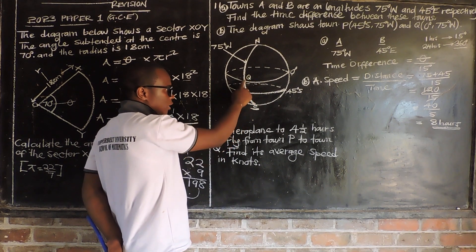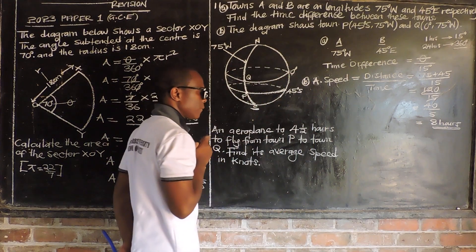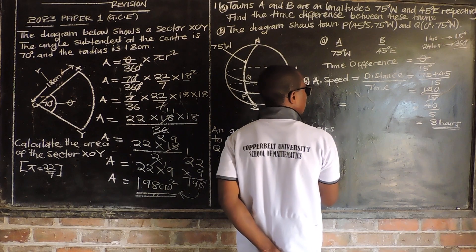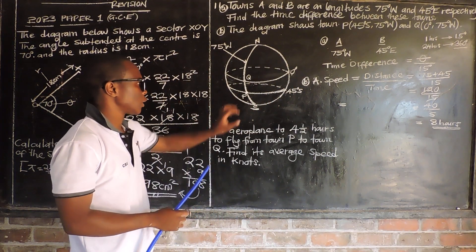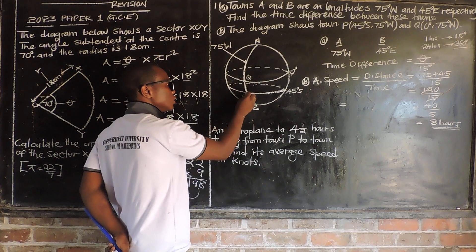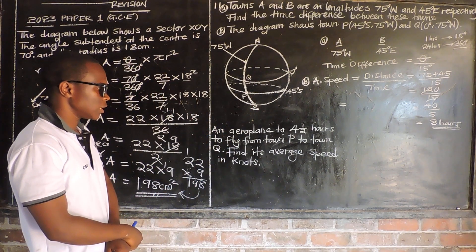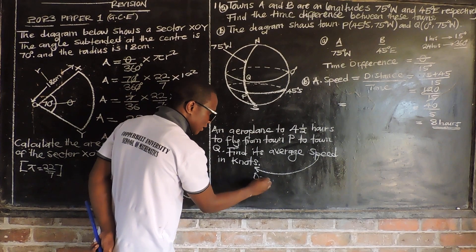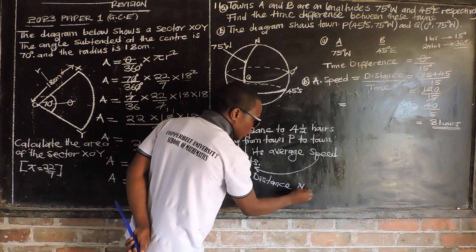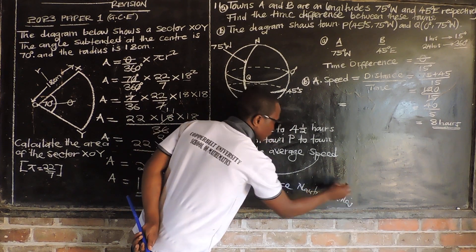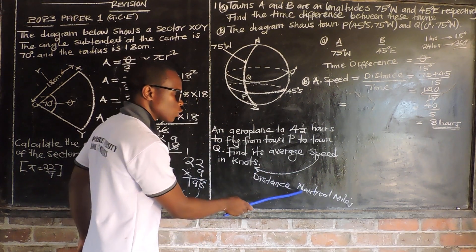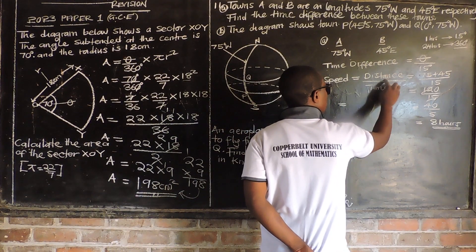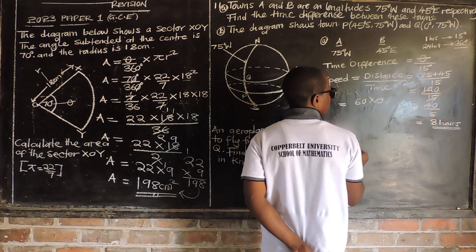The distance between B and Q — we realize that B and Q are on the same longitude. We know how to find distance along a longitude in nautical miles. Since the speed is in knots, the distance should be in nautical miles. Distance is given by 60 multiplied by theta.